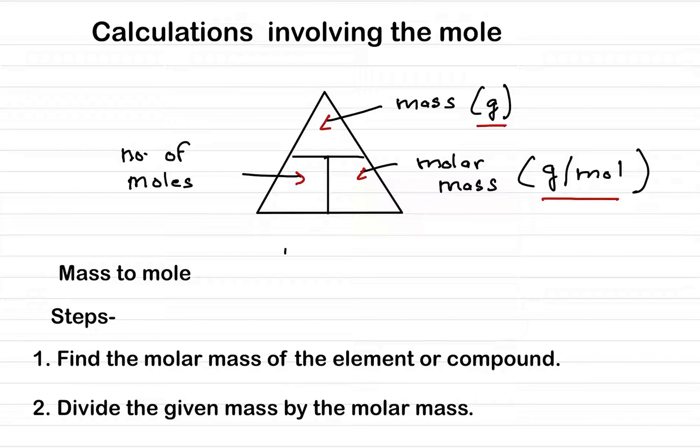Now the first thing that we are going to do in calculations involving the mole is convert mass to mole. There are two main steps to convert mass to mole. Number one: find the molar mass of the element or compound. Number two: divide the given mass by the molar mass.